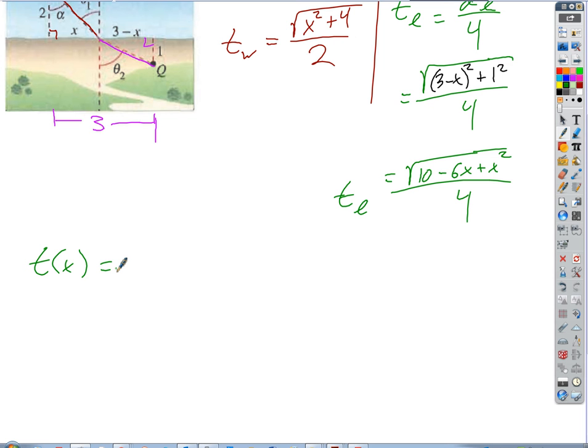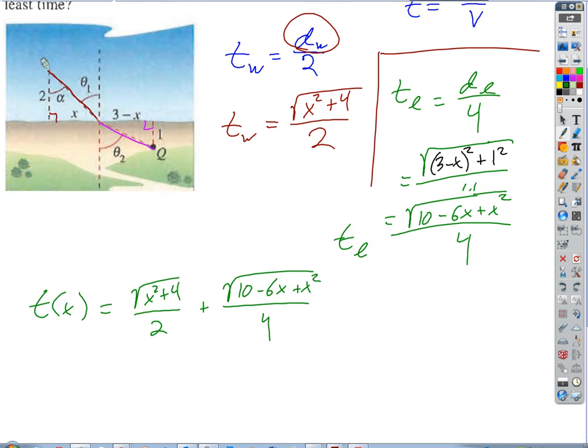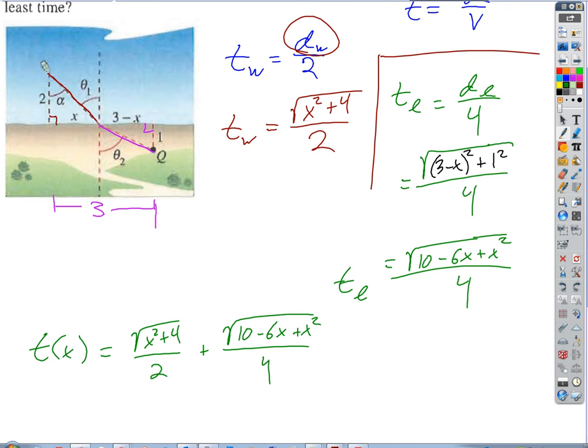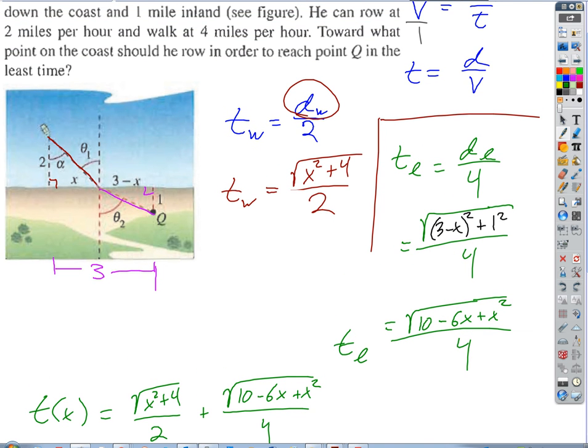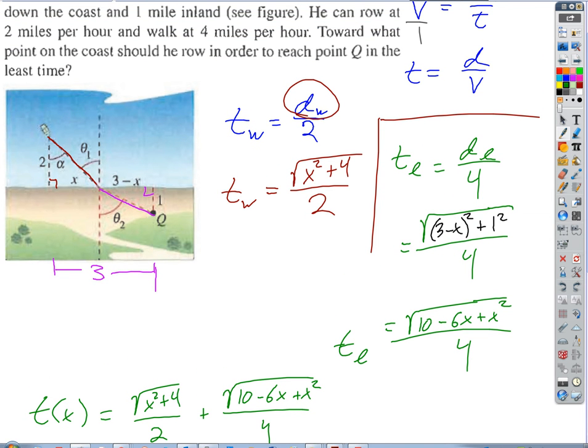So maybe the last step before I let you guys do the calculus, if we do overall time, we'll call this T of x. Does that make sense? Time is a function of where we hit the coast first. Let's see, I mean, it's easier, but on the second hand, it's also really not because you get two radicals. What are the reasonable, what's our independent variable here? X.